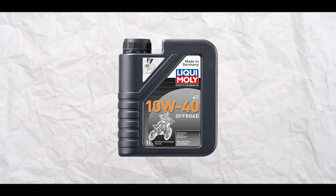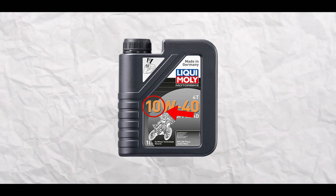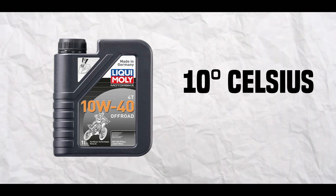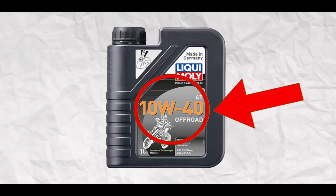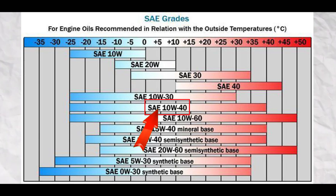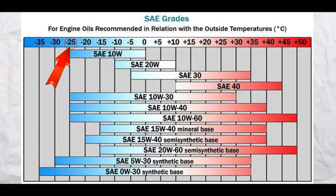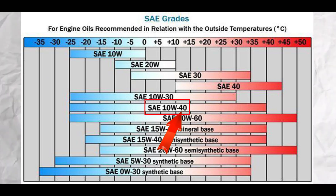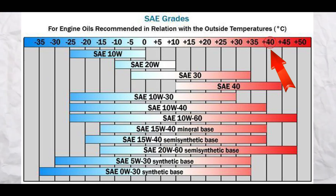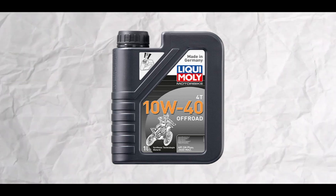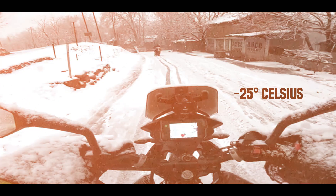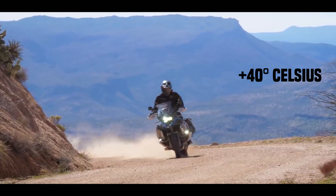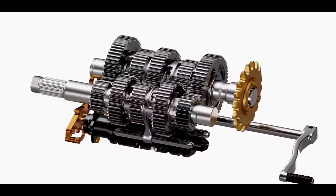Note that for 10W40, the numbers before and after W are not degrees Celsius or Fahrenheit directly — they are grades with a specific identification process. According to the engine oil chart, '10' before W means the oil remains effective down to minus 25 degrees Celsius, and '40' after W means the oil maintains viscosity up to plus 40 degrees Celsius. So 10W40 engine oil will not freeze at minus 25°C and will not thin out at plus 40°C, ensuring good engine lubrication.